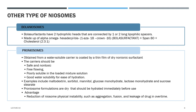Proneosomes are another type of neosome, obtained from water-soluble carriers coated by a thin film of dry non-ionic surfactants. The carrier should be safe, non-toxic, free-flowing, poorly soluble in the loaded mixture solution, and have good water solubility for ease of hydration. Examples of carriers include maltodextran, sorbitol, mannitol, glucose monohydrate, lactose monohydrate, sucrose, and steroid. Proneosomes are dry formulations hydrated immediately before use. An important advantage is the reduction of neosomal physical instability such as aggregation, fusion, and drug leakage over time. They are also easier to handle as powders.